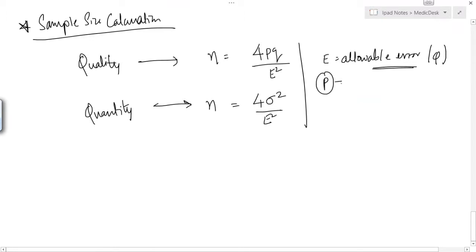The p would be the prevalence and that will be given in the questions. And we will find q is equal to 1-p or 100-p if it is in percentage. And this particular is standard deviation squared.